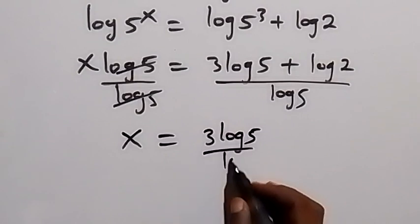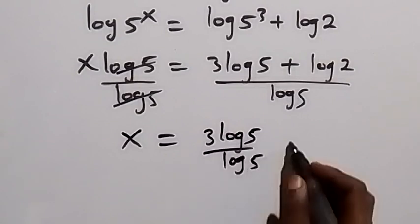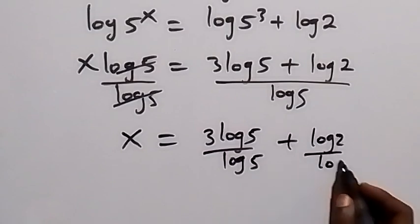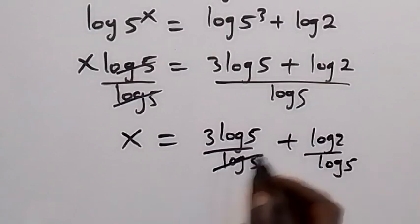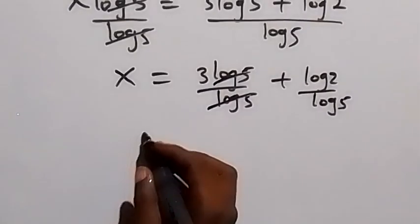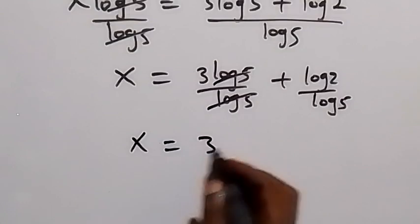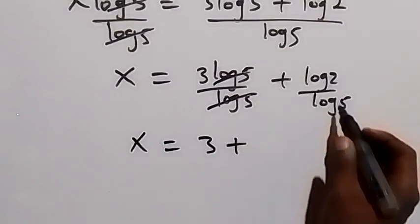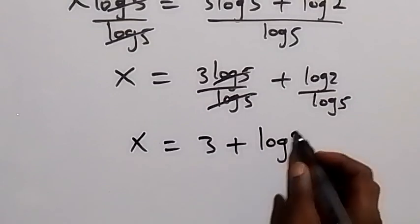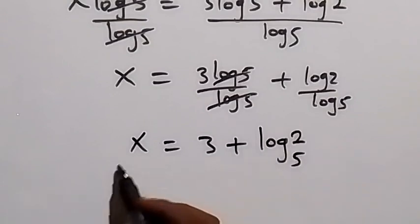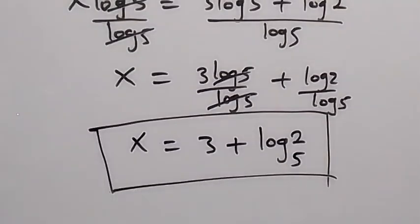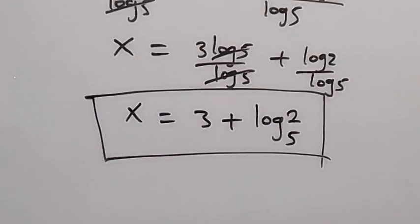We have 3 log 5 over log 5, plus log 2 over log 5. Log 5 cancels each other, and this can be written as x equals 3 plus log 2 over log 5, which we write as log base 5 of 2 by change of base. And here we have the value of x. That is our answer.